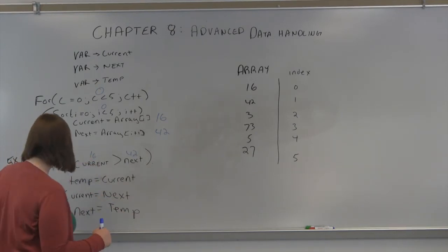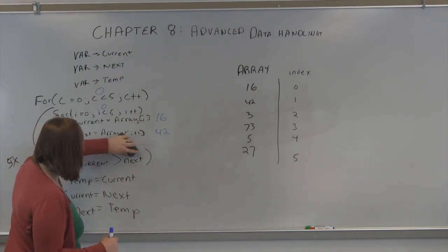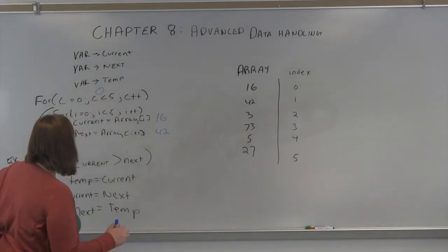So 16 to 42, they're in the right relationship. So I come back here and add one to i on the inner loop.